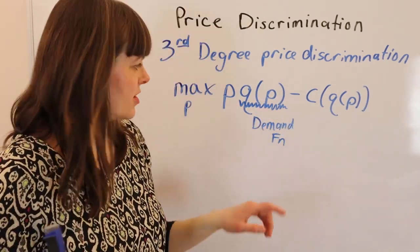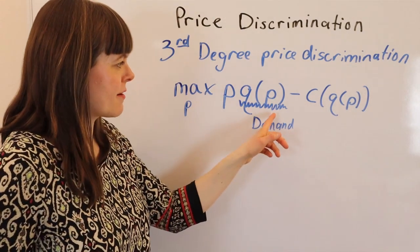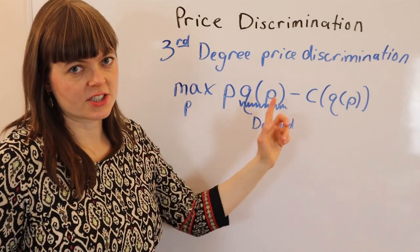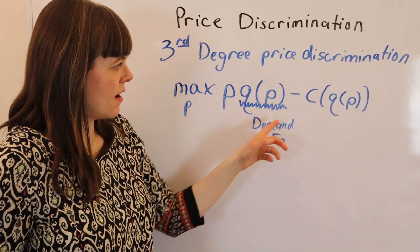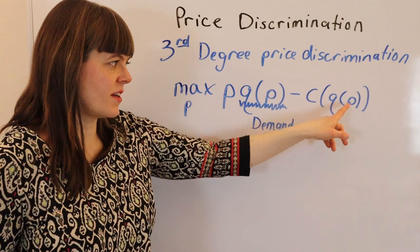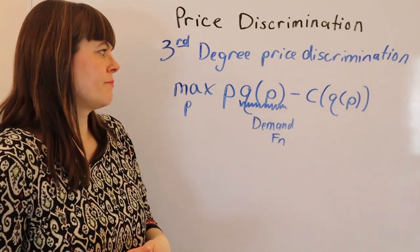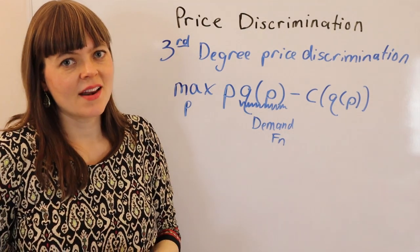I meant demand function. I mean it'll be a curve if you graph it, but yeah, that's a demand function, which is always a relationship between price and quantity. And then minus costs, and costs are a function of the quantity, and of course quantity is a function of price. So that's just a classic profit maximization problem.